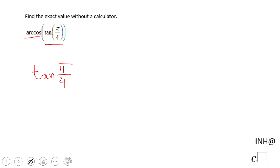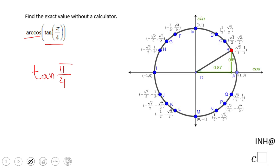Tangent of π over 4, which is 45 degrees, is going to be 1 because tangent is sine over cosine, and at this angle sine and cosine are the same.